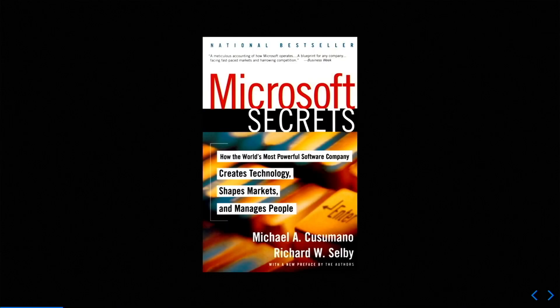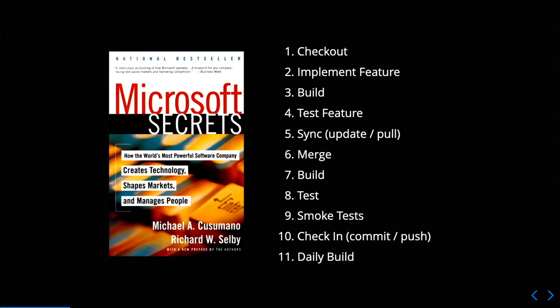The story of feature toggles starts with this book, written by some Microsoft engineers who built early versions of Word, Excel, and one version of Windows — released in about 1995. It's kind of an old book, and I haven't actually read it and probably won't recommend reading it. I don't think a lot of the information in here is relevant anymore, but it does have one interesting section that goes through the details of how Microsoft was developing software at that time. It was a 10-step process that would probably look pretty familiar to most people now, even though this was set in 1995.